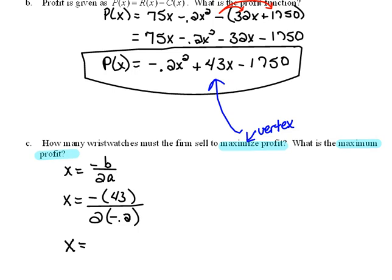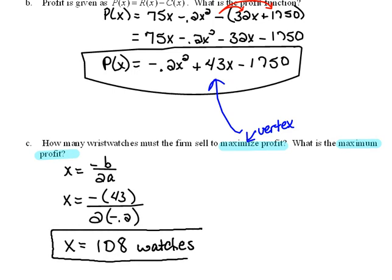And now when we simplify that, negative 43 divided by 2 times negative 0.2 is going to be, don't forget, these are wristwatches, so we need to sell a whole number of wristwatches, not a partial number. So we're going to go ahead and round that to 108 wristwatches. It will take selling that many to maximize our profit.